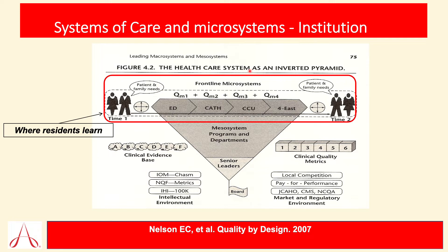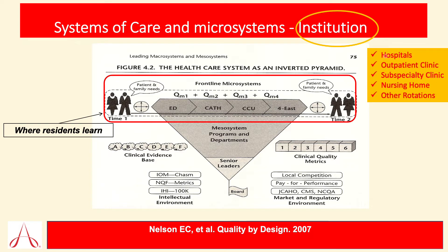The smaller systems are the micro systems that the resident usually works in, and the other bigger systems that residents and fellows might not be directly exposed to, but they are definitely affecting the micro system flow. For example, here you can take an institution — that could be the hospital during the inpatient rotation or the outpatient clinic, nursing home, or any other rotation.